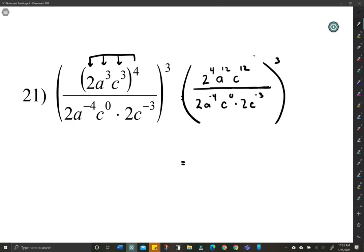a to the 12th. Now, let's notice. a to the negative 4, it's going to move up here because it's a negative. So I'm going to move that one up here, a to the positive 4. c to the 12th is still up there.